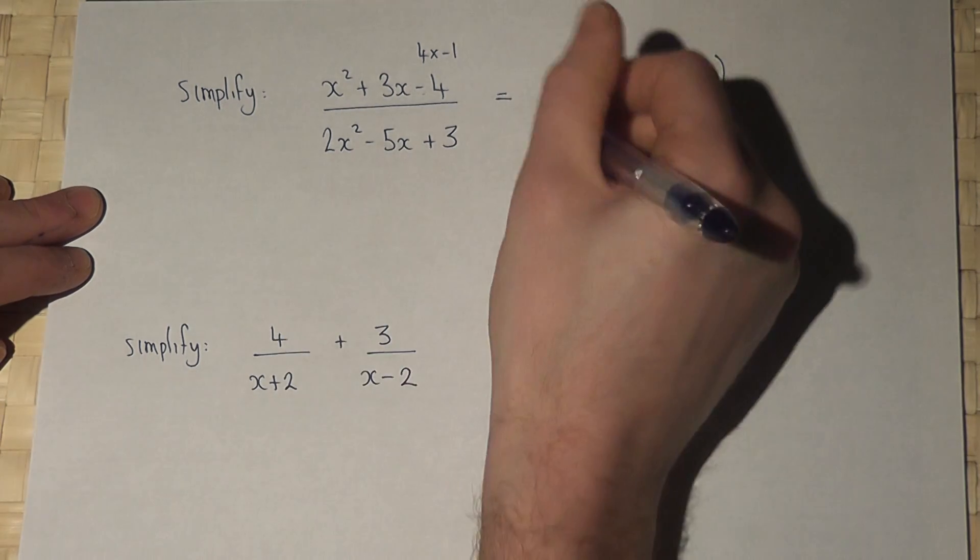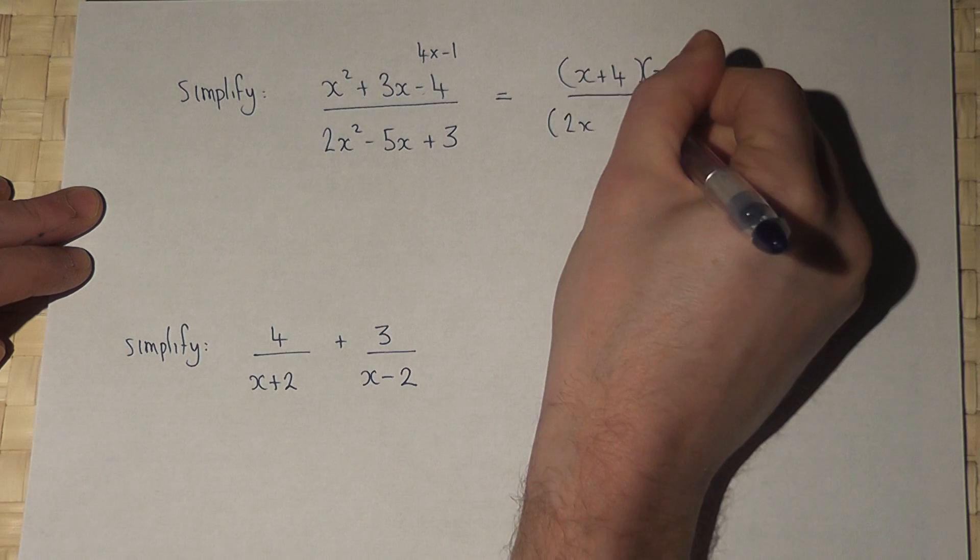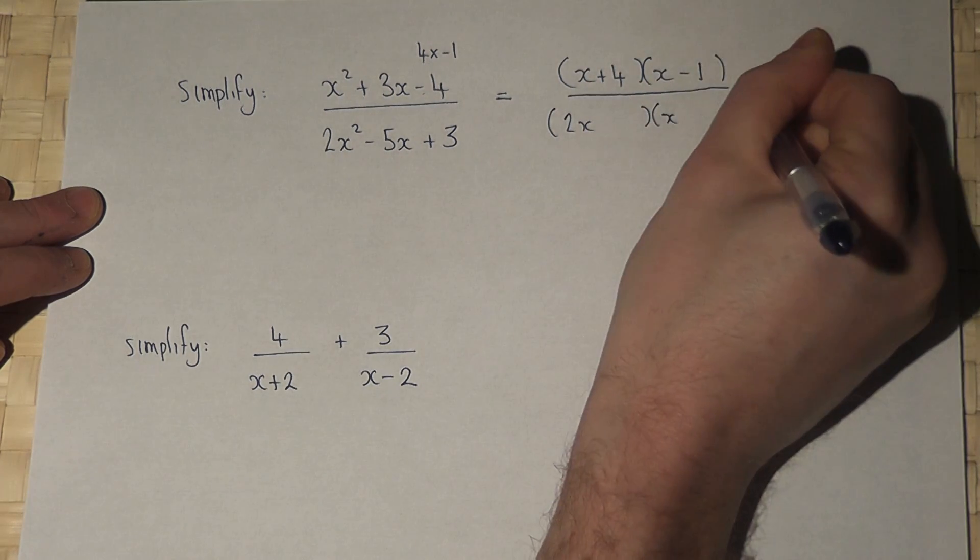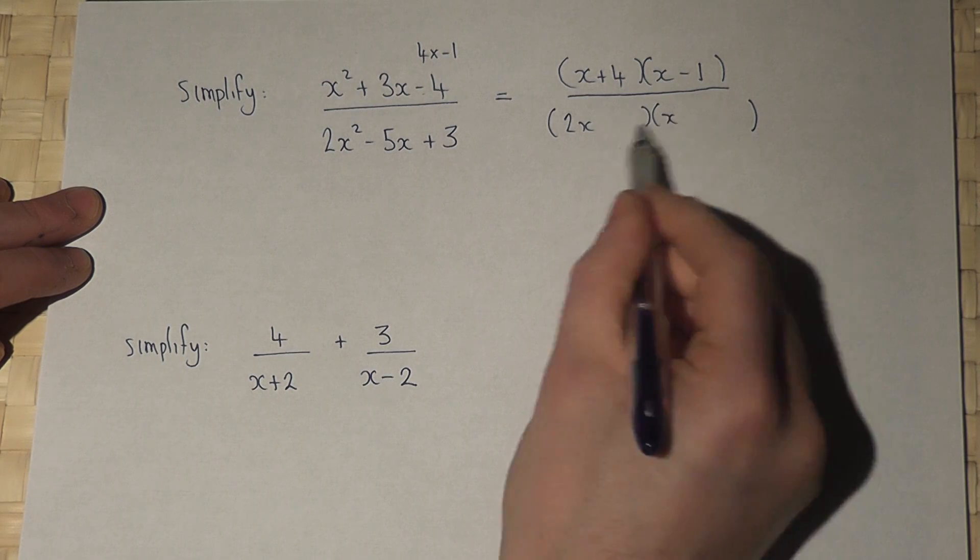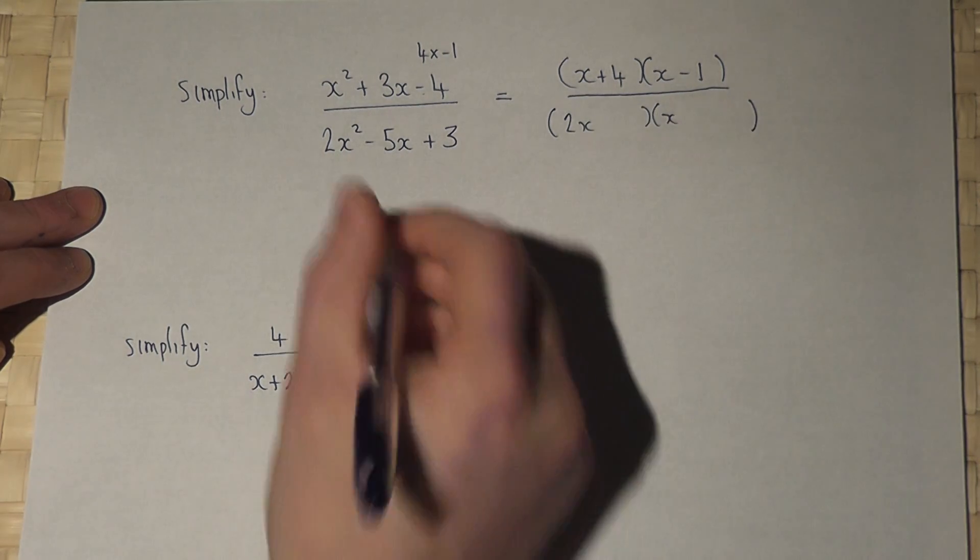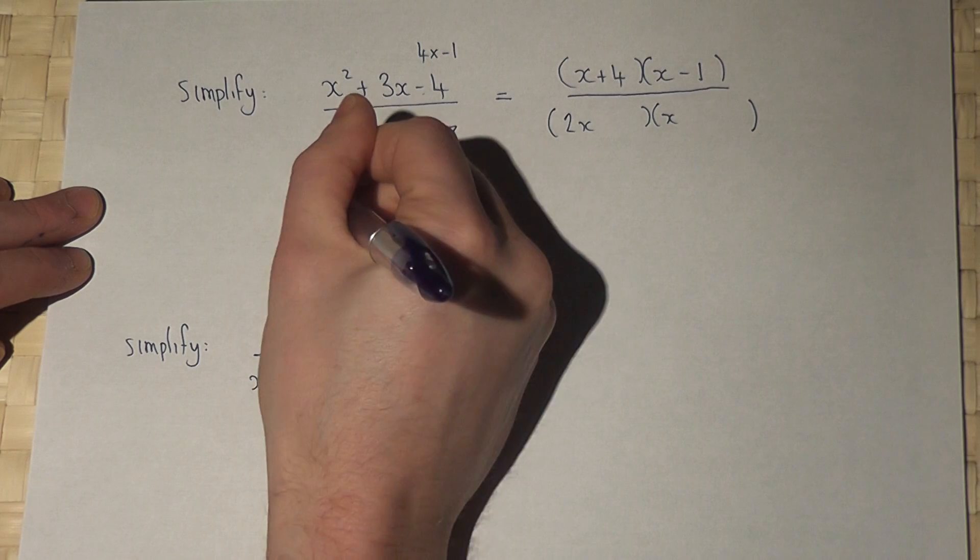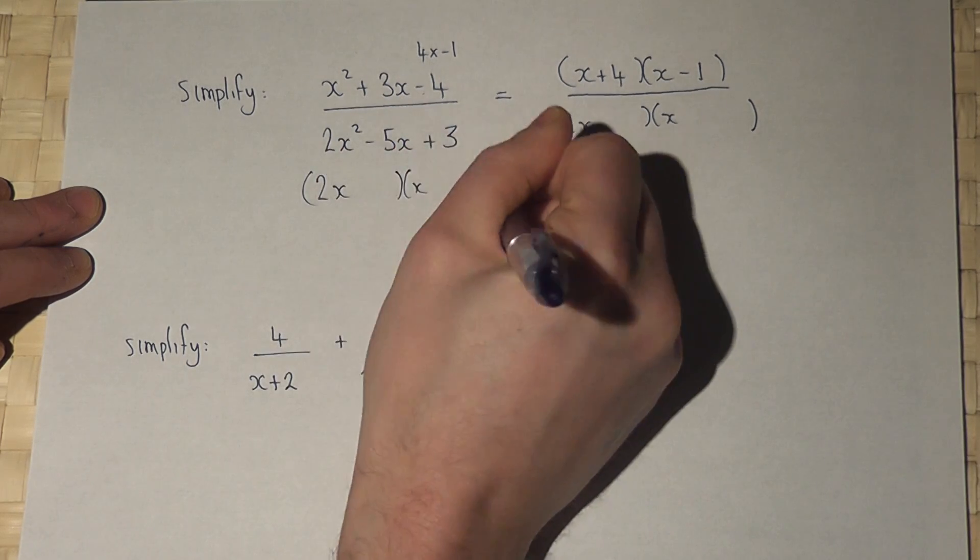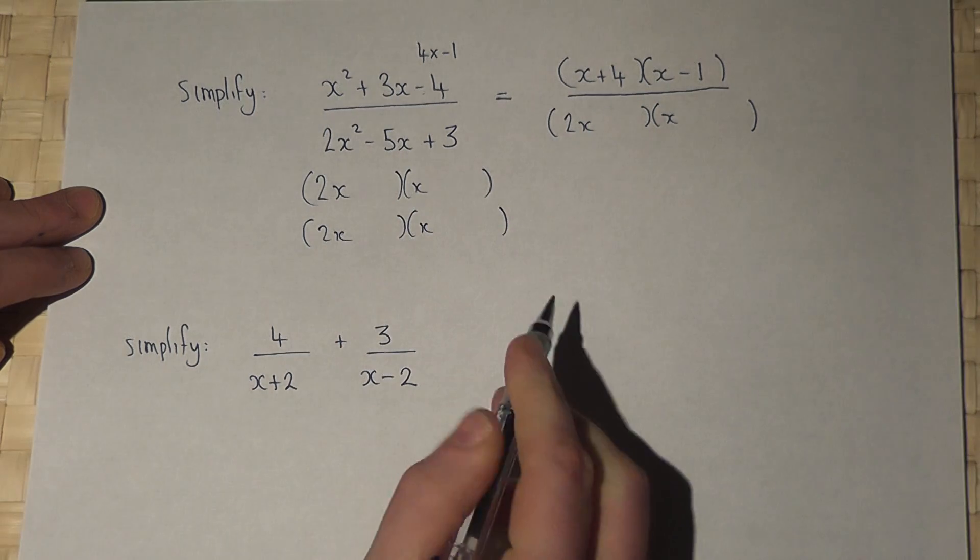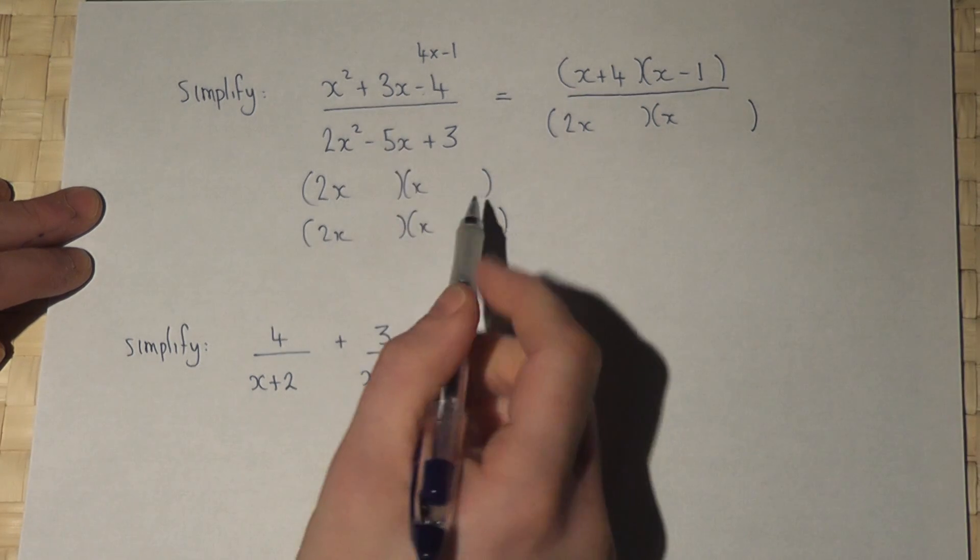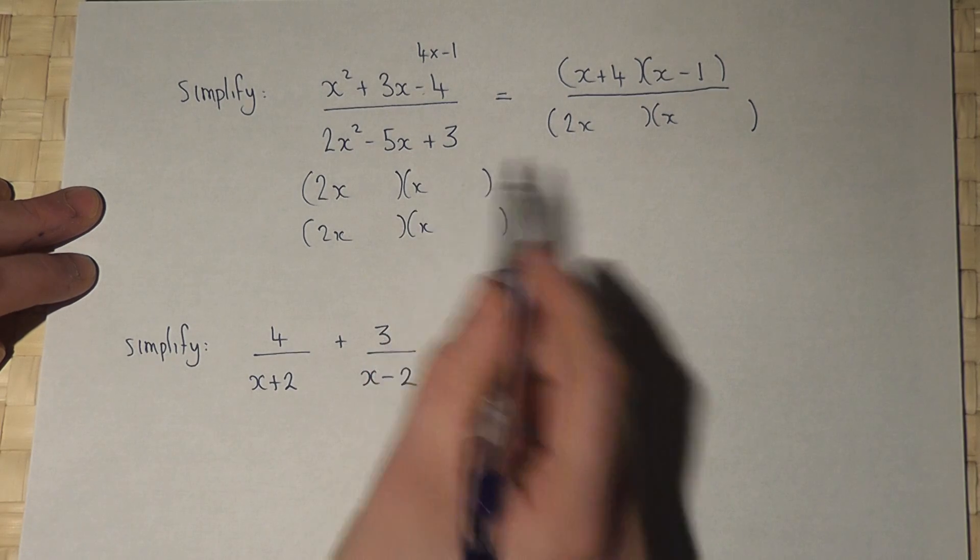The bottom requires a 2x and an x. However, to get those numbers is not so easy. But if we consider the options, to get a plus 3 here and a minus 5 there requires a minus 1 and a minus 3.